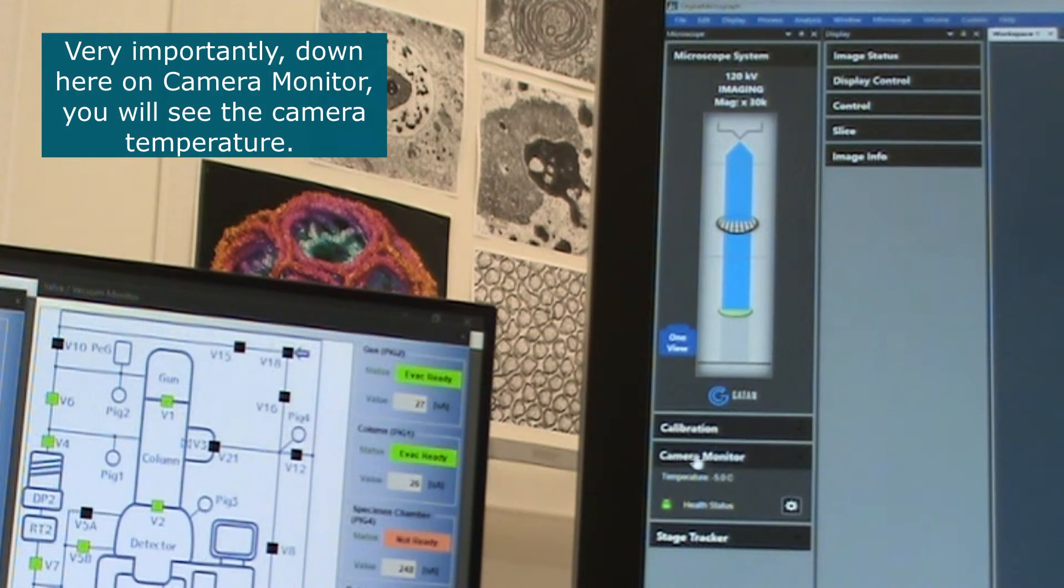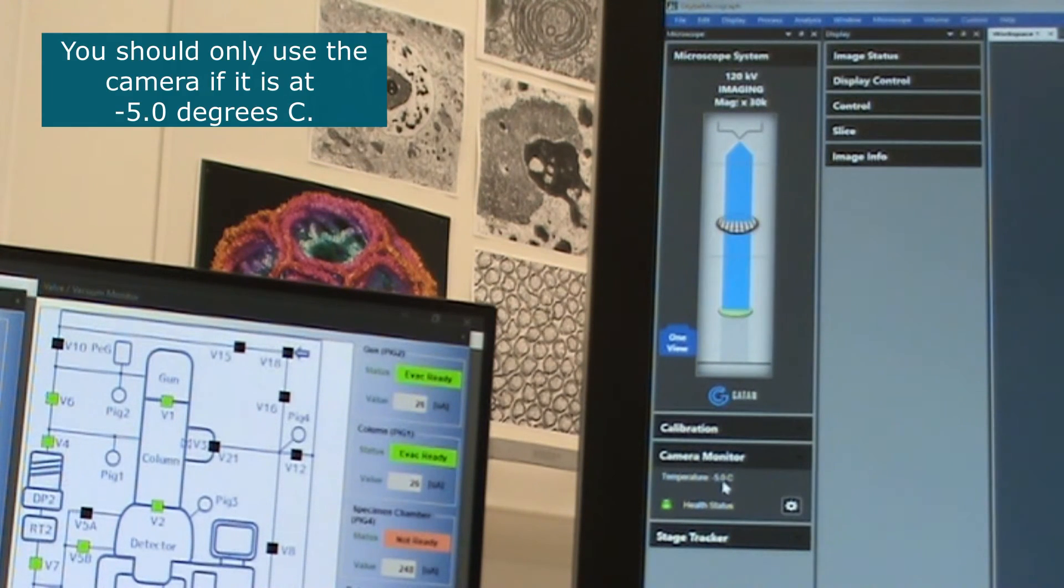Very importantly down here on camera monitor you will see the camera temperature. You should only use the camera if the temperature of the camera is at minus five degrees Celsius.